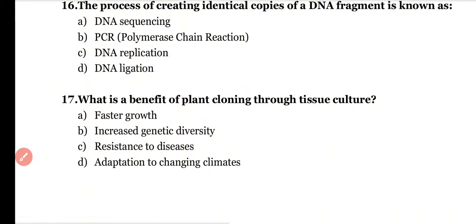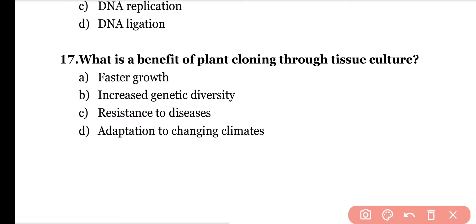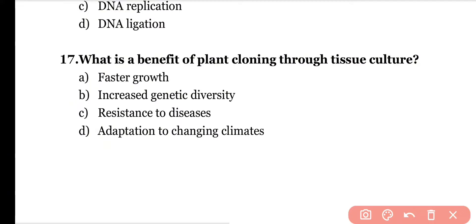Question number seventeen: What is a benefit of plant cloning through tissue culture? Options: faster growth, increased genetic diversity, resistance to diseases, adaptation to challenging climate. Correct answer is option A. Through tissue culture, plant cloning results in faster growth.